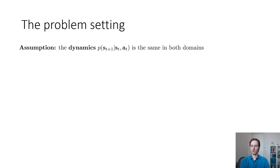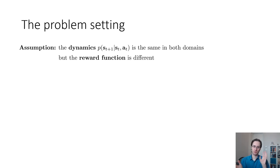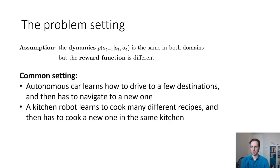The assumption is going to be that the dynamics, P of s_{t+1} given s_t and a_t, will remain the same between the source and target domains, but the reward function will change. Essentially, the MDP is the same in every way except for the reward function. This is not as general as the full transfer setting — it won't capture transferring from Indiana Jones to Montezuma's Revenge — but it does capture many settings that are quite common in reality.